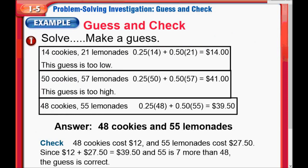I pre-solved this and made a couple of guesses, then adjusted my answer until I got the correct answer. First, I guessed that maybe there were 14 cookies. If there were 14 cookies, they said there were seven more lemonades, so that means there were 21 lemonades sold. 25 cents times each of those cookies, 50 cents times each of those lemonades — I ended up with an answer of $14. That's no good because the guess is just too low, so I need to adjust my numbers up.